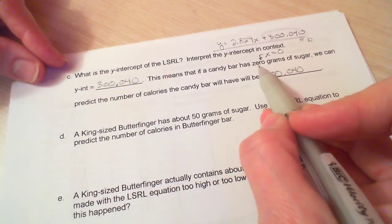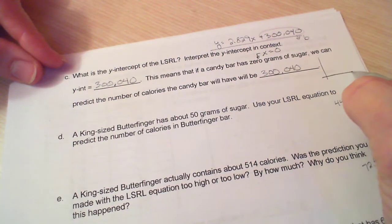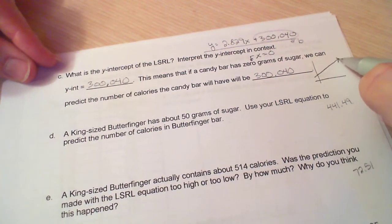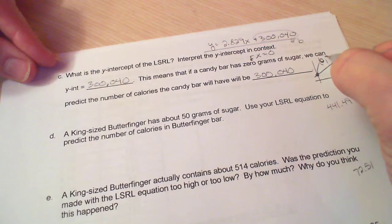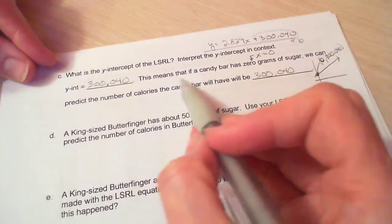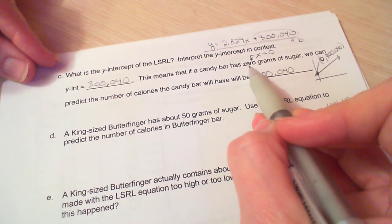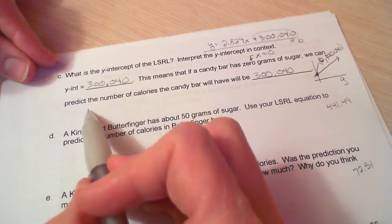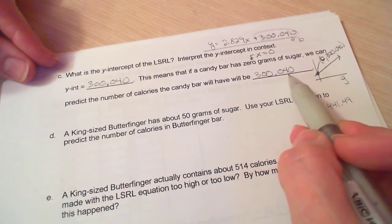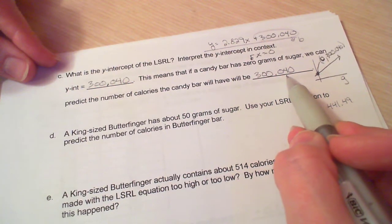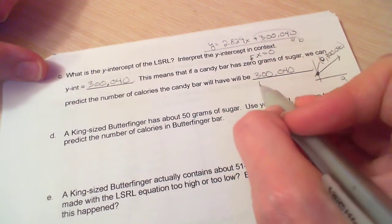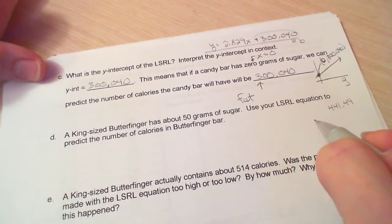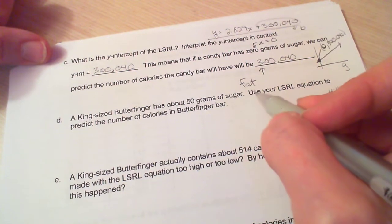This means that if a candy bar has zero grams of sugar - so picture your graph, here is my least squares regression line, this is my y-intercept. So at this point x is zero because I went over zero and I went up 300.040. So this means that if a candy bar has zero grams of sugar, x is zero because that's my x-axis, we can predict the number of calories the candy bar will have is 300. So it already has some calories even if the grams of sugar are zero. So where would these extra calories be coming from? Well, probably from the fat. Candy bars have other stuff in them besides sugar that contribute to the calories.